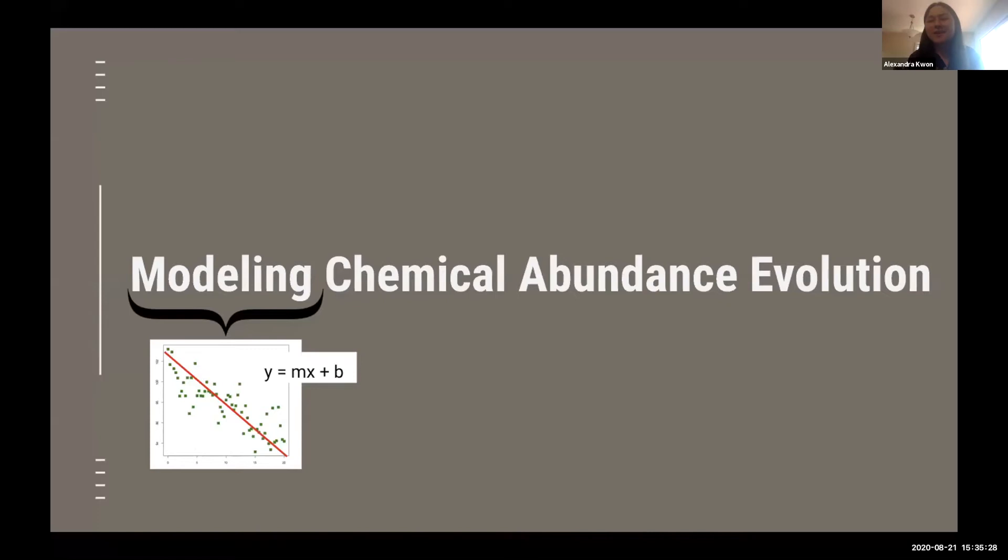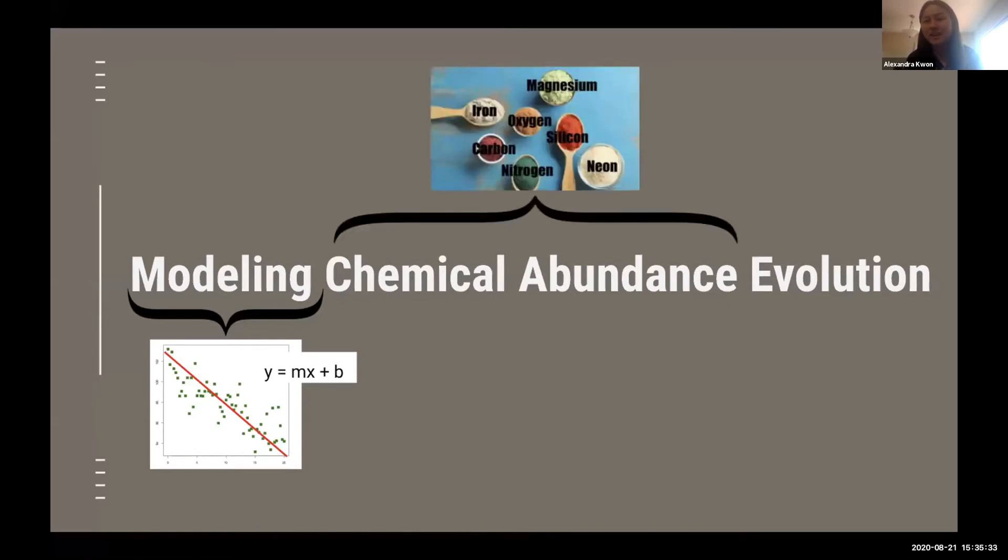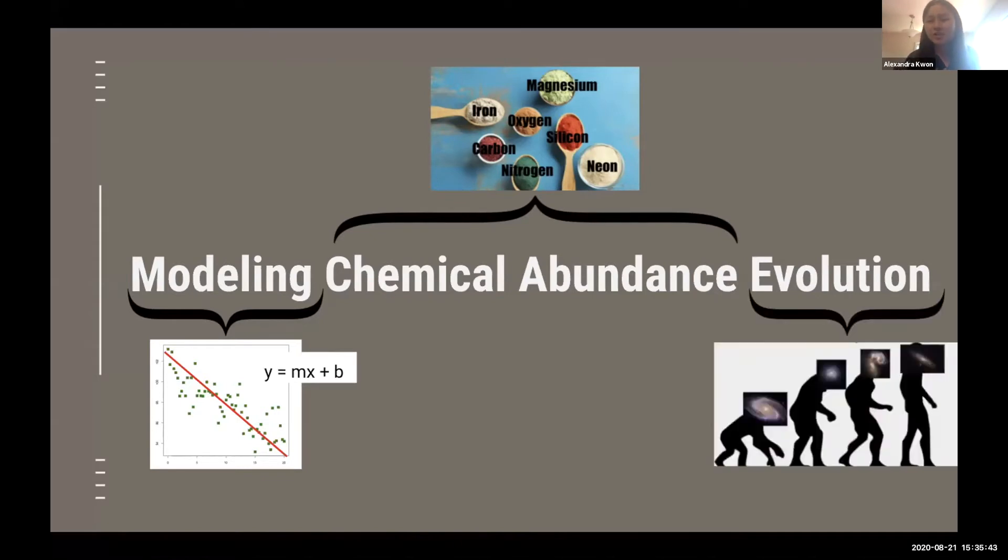What we are modeling is the chemical abundance, which is the amount of different elements within a galaxy. Additionally, I'll be using the term metallicity, which is another way of describing the amounts of different elements. Evolution is the change over time. So putting it all together, we are finding a model with the best parameter values that explains how the different amounts of elements within a galaxy change over time.